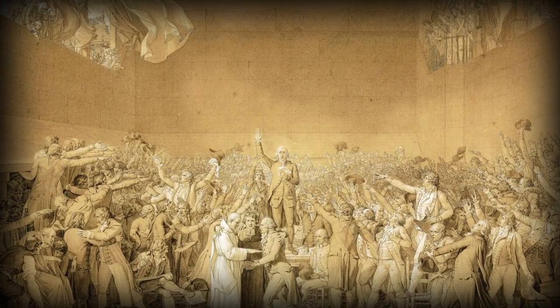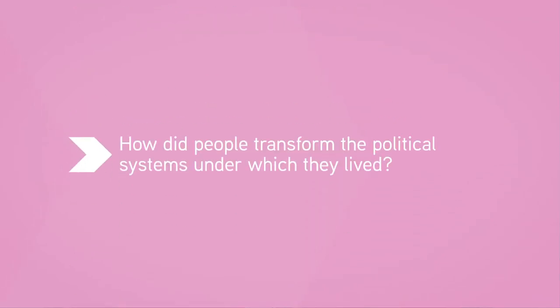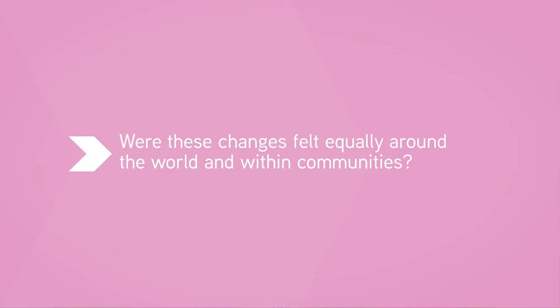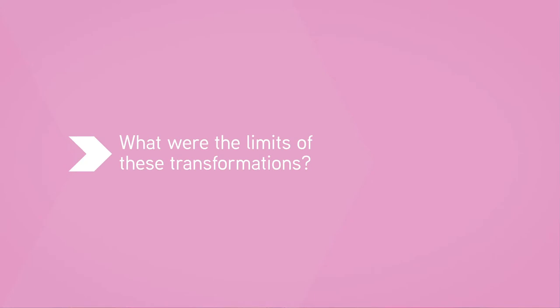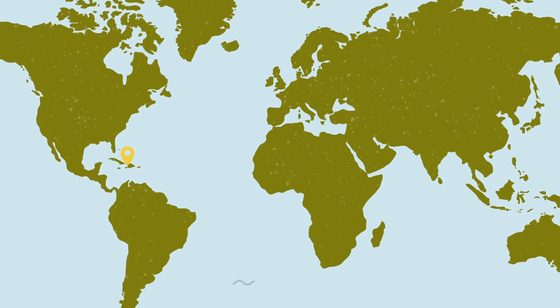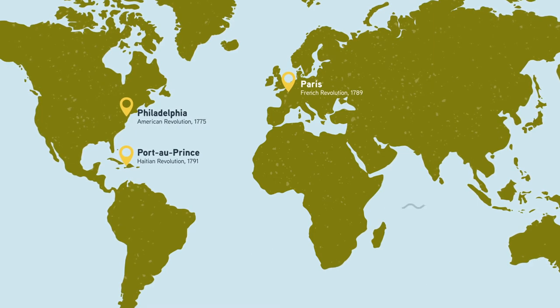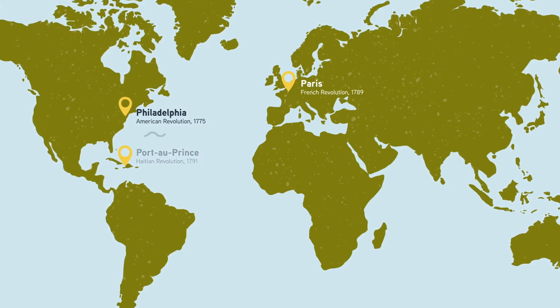In this unit, we'll ask: Why did the long 19th century witness so many revolutions? How did people transform the political systems under which they lived? Were these changes felt equally around the world and within communities? What were the limits of these transformations? To answer these questions, we must look at the long 19th century from several perspectives. The great revolutionary cities of the age, such as Port-au-Prince, Paris, and Philadelphia, certainly matter. But there are also some less obvious locations around the world that participated in this age of revolutions in different ways.